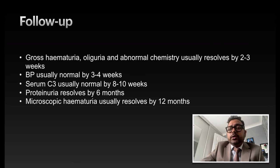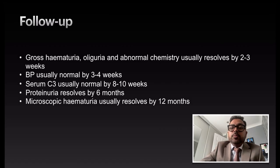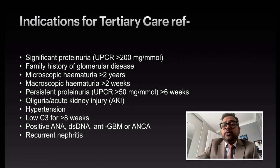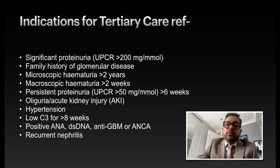At follow-up: gross hematuria, oliguria, and abnormal biochemistry usually resolve by 2–3 weeks. Blood pressure should normalize by 3–4 weeks. C3 level should normalize by 8–10 weeks. Proteinuria resolves by 6 months and microscopic hematuria by 12 months. Consider tertiary care referral if: significant proteinuria (urine protein-creatinine ratio >200), family history of glomerular disease, microscopic hematuria >2 years, macroscopic hematuria >2 weeks, persistent proteinuria (PCR >50) lasting >6 weeks, oliguria or acute kidney injury, hypertension, low C3 >8 weeks, positive ANA, anti-dsDNA, anti-GBM or ANCA, or recurrent nephritis.